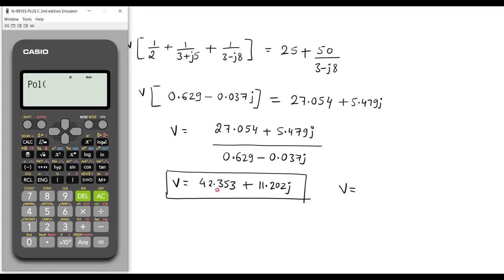So this is the values we supposed to feed: 42.353 comma, we should use comma and feed the imaginary values, that is 11.202. So it gives 43.80 at an angle of 14.814. This is the answer.